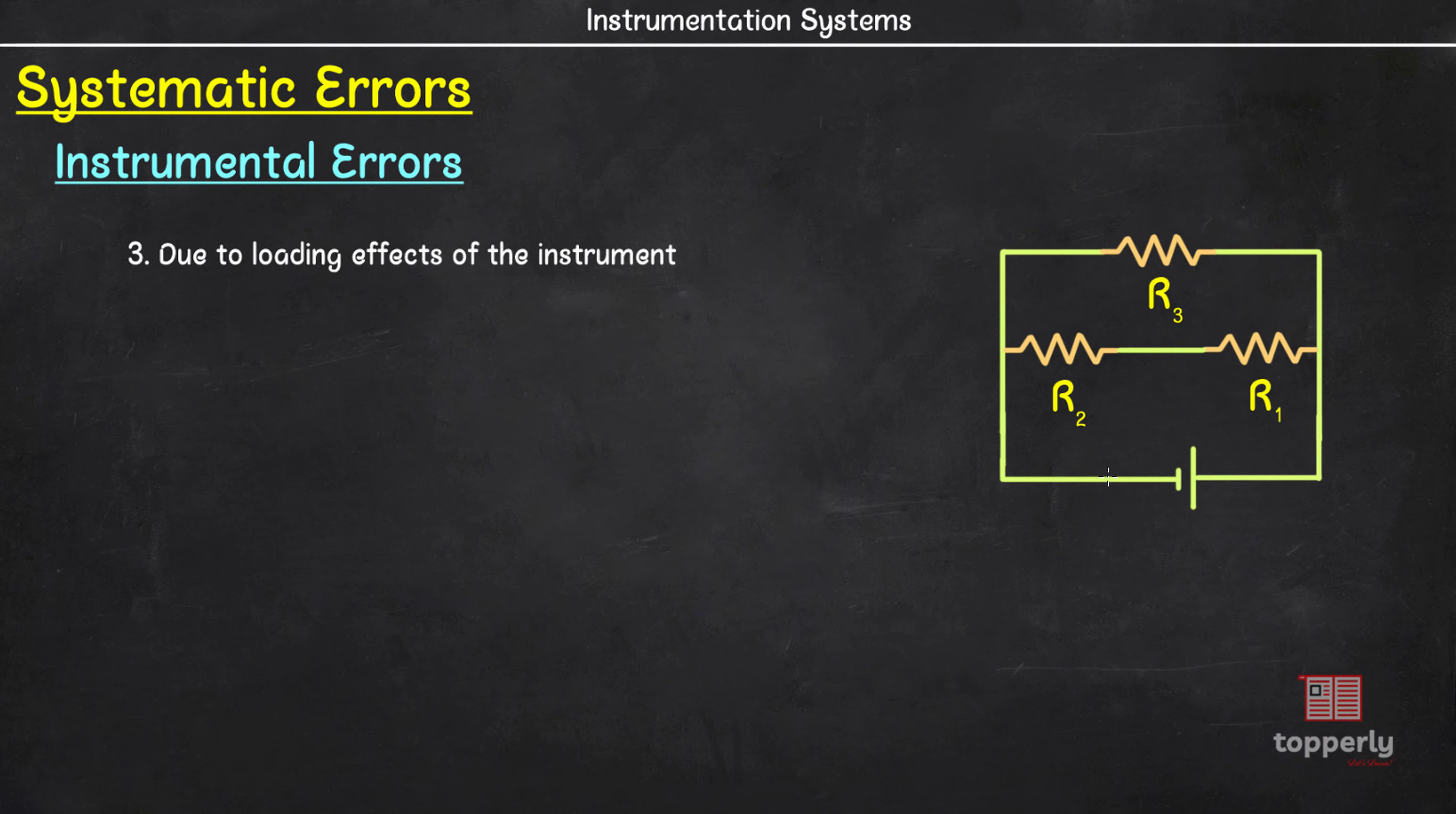Consider the circuit shown here. Suppose we need to measure the voltage across R3. For that, as you all know, we connect the voltmeter across the resistance R3. Now the internal resistance of the voltmeter Rv should be very much greater than R3. Typically Rv should be greater than megaohms. Why? To understand that, consider that the internal resistance Rv is small. That is, we are considering Rv is small, or Rv is comparable with the resistances R3, R2, and R1.